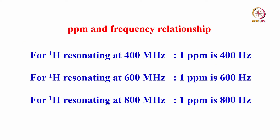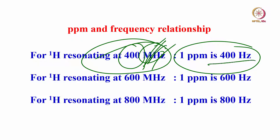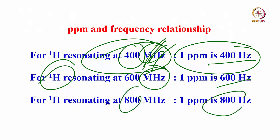We can convert ppm to frequency with a simple relationship. For proton resonating at 400 MHz, 1 ppm equals 400 Hz — take the resonating frequency in megahertz and express it in hertz. So 1 ppm is 400 Hz at 400 MHz, and 1 ppm is 600 Hz at 600 MHz. For 2 ppm, 4 ppm, simply multiply by that number.